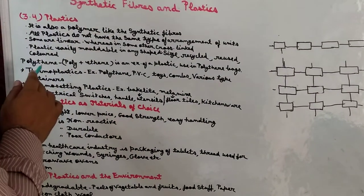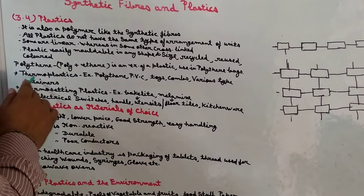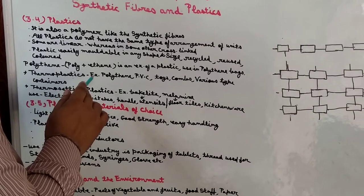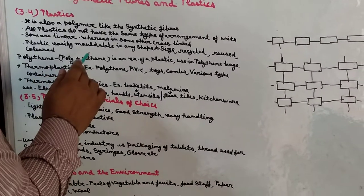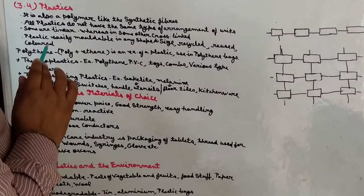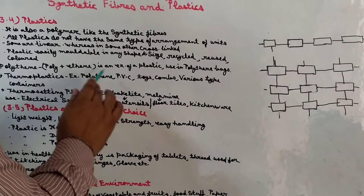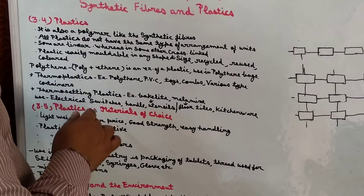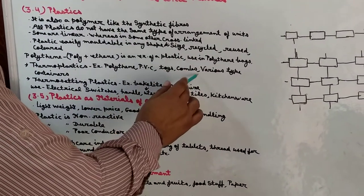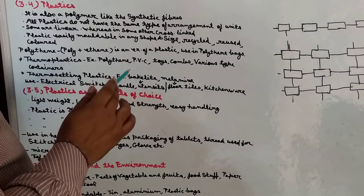Plastic दो प्रकार के होते हैं: thermoplastic और thermosetting plastic. Thermoplastic क्या है? The plastic which can be molded easily by heating — अर्थात गरम करके उन्हें किसी भी shape और size में दोबारा change किया जा सकता है. Examples हैं: PVC जो तारों पर plastic होती है, toys, various types of utensils — ये thermoplastic के बने हो सकते हैं.